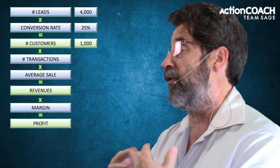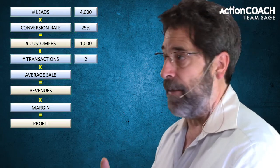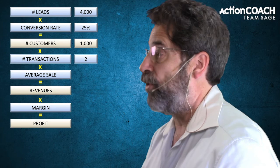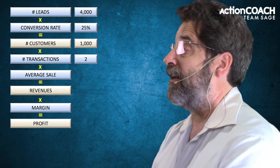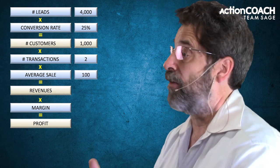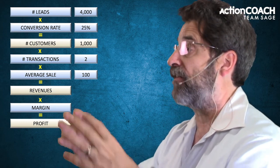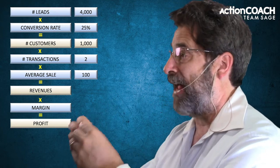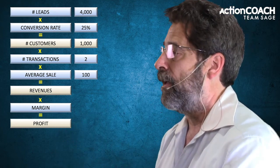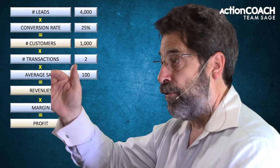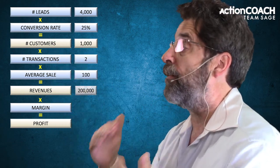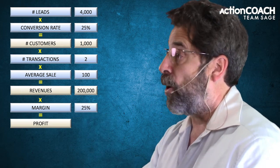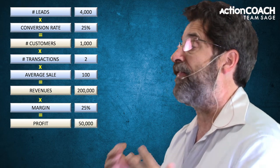If on average those customers buy from you twice — some might buy once, some might buy dozens of times, but the average is two — and the average amount they purchase is $100, then 1,000 customers times two transactions times $100 would mean $200,000 in revenues. Then if we have a 25% margin, that means we would have $50,000 in profit.